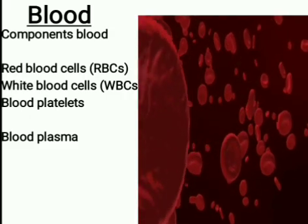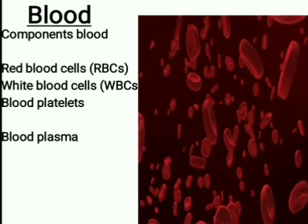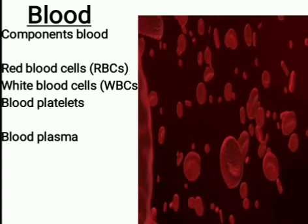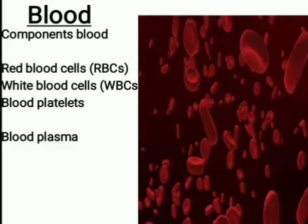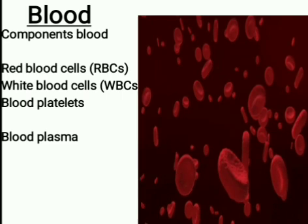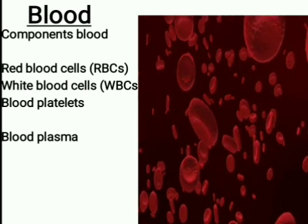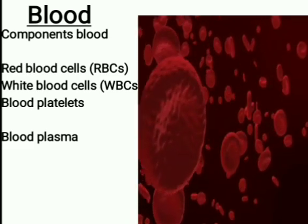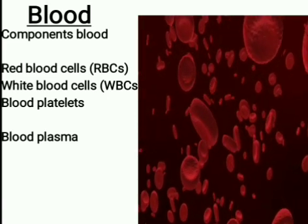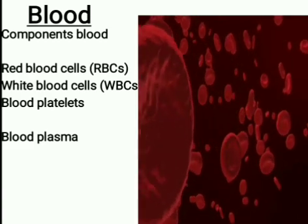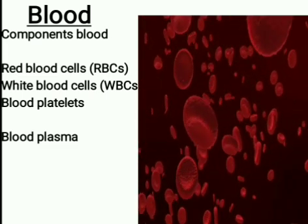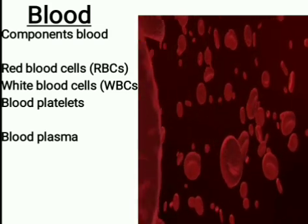Blood is a thick red fluid containing red blood cells (RBCs), white blood cells (WBCs), blood platelets, and blood plasma. Blood transports oxygen, food materials, and hormones to all parts of the body. Blood takes back carbon dioxide from all parts of the body to the lungs. Blood protects the body from disease and other infections, and also helps to maintain the body at a constant temperature.